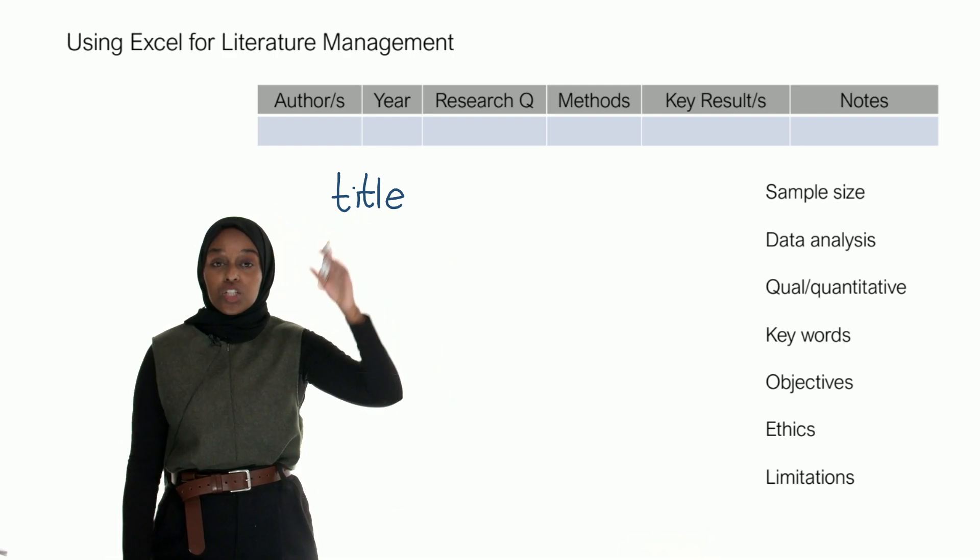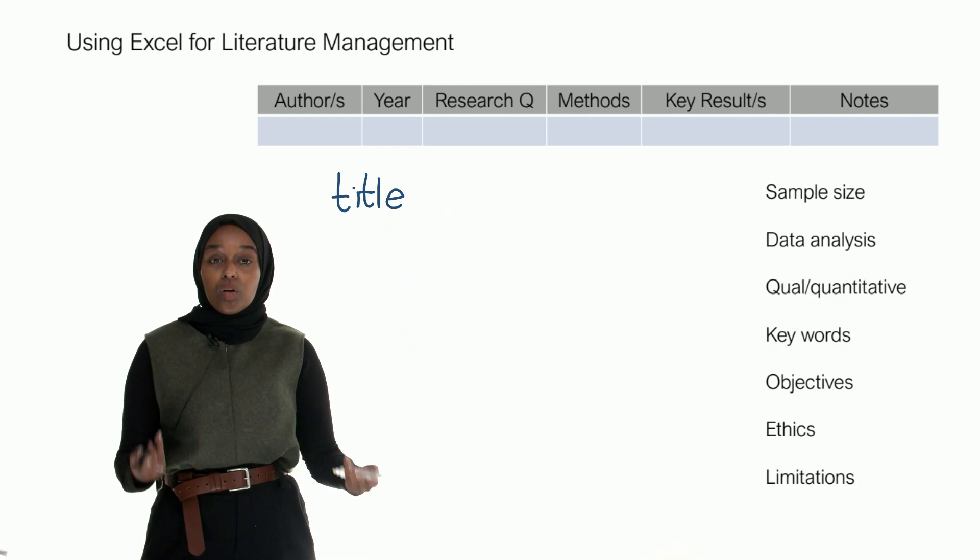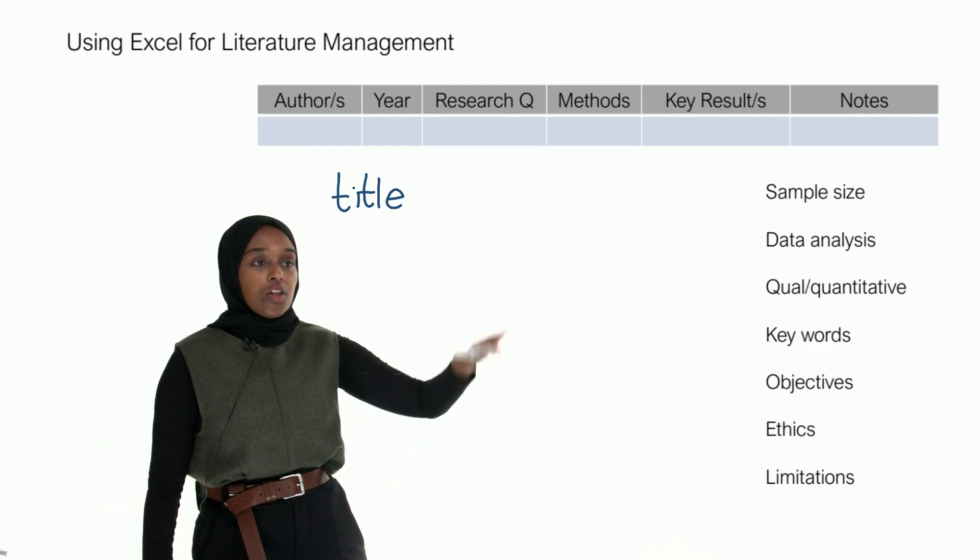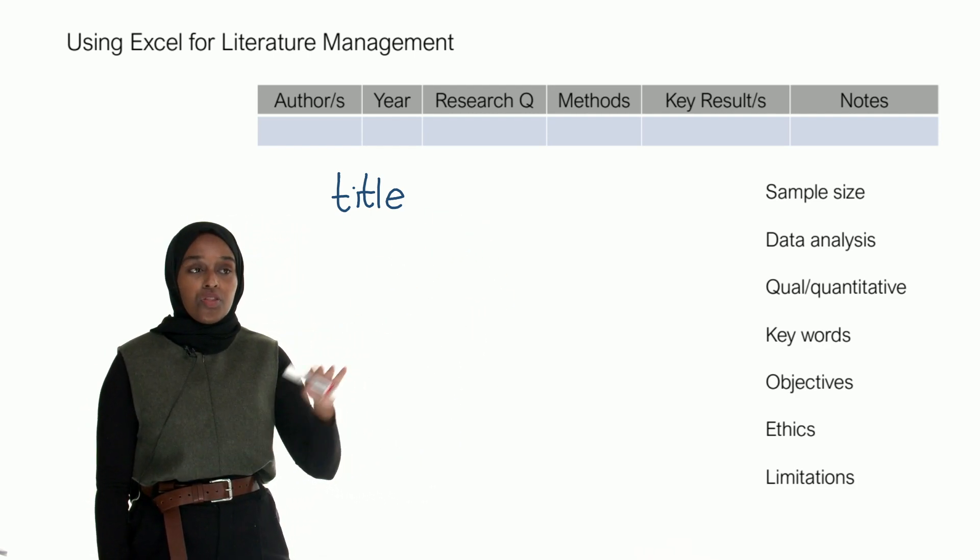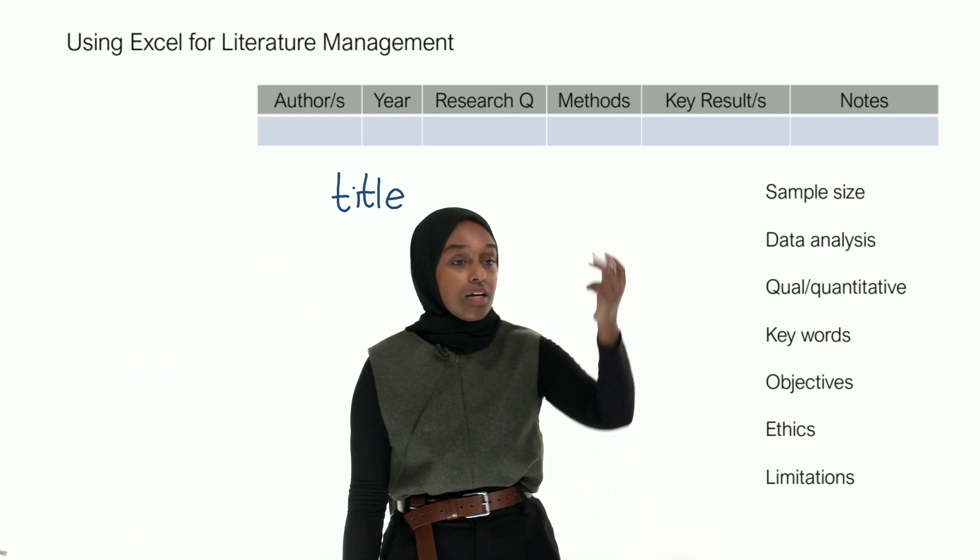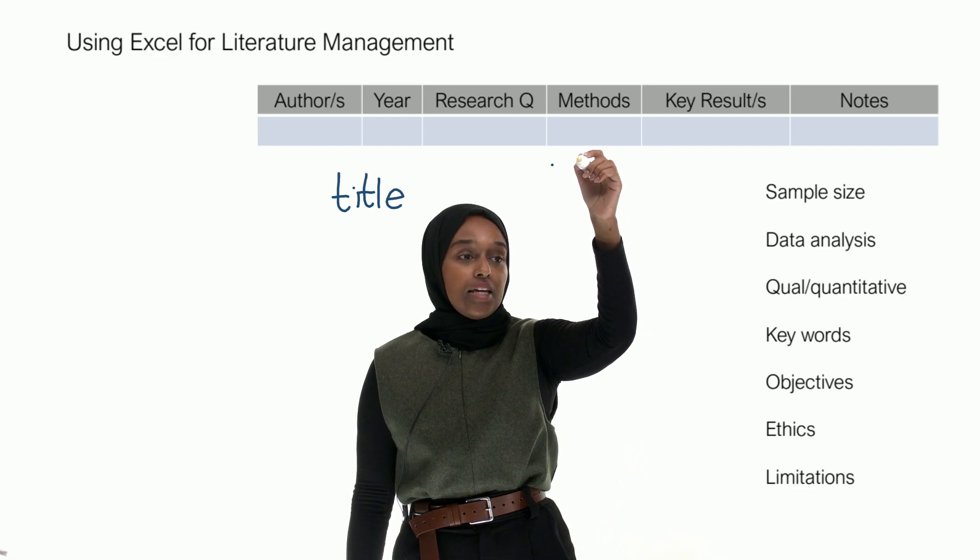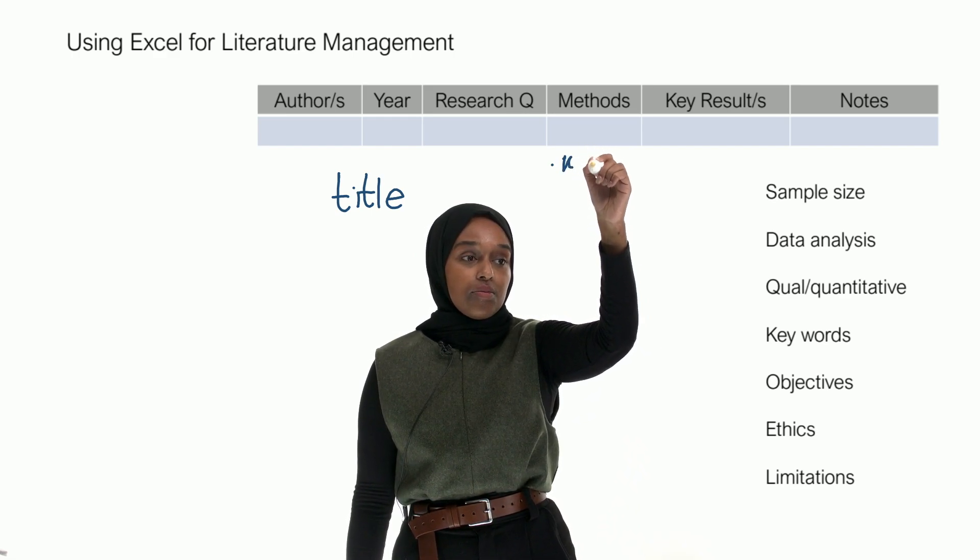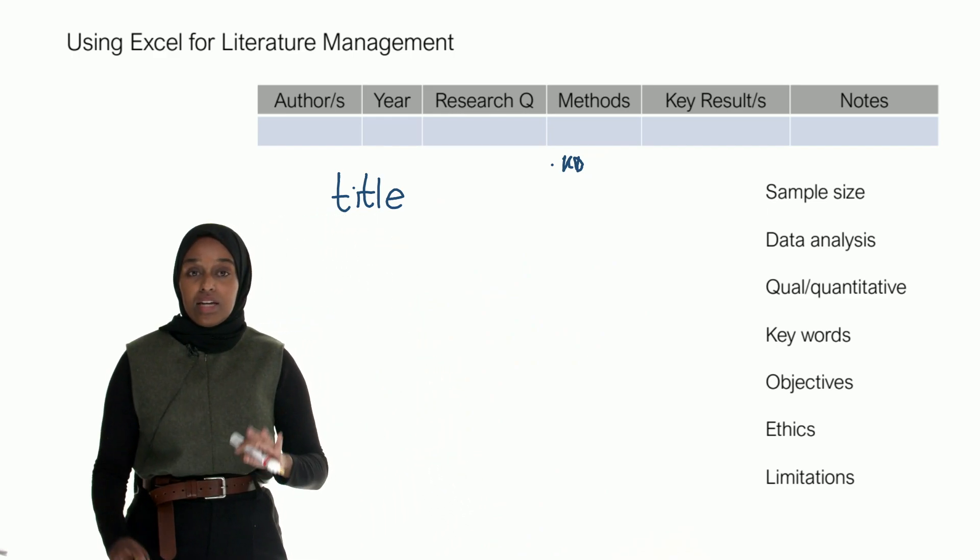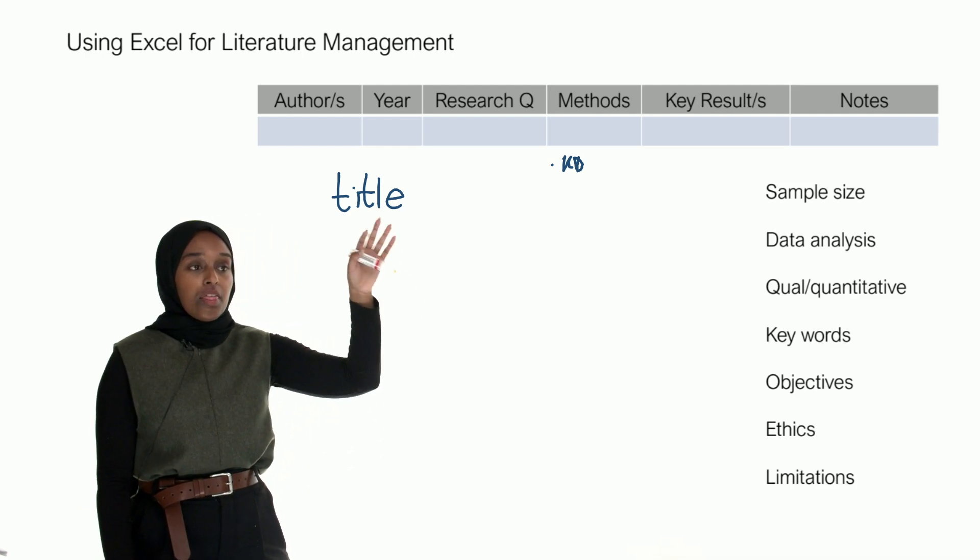You then want to think about the research question - what is it that they are looking for in this particular research paper? You then want to look at the methods. This can all be in bullet points. You don't have to write full sentences. So for example, in methods, we can say they used a knockdown system. I'm just going to write knockdown, KD. I know what that means.